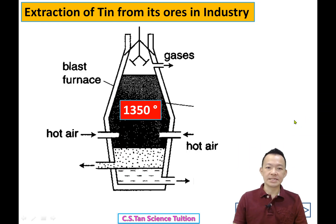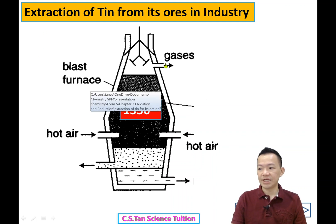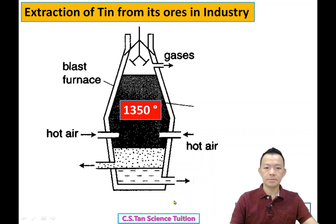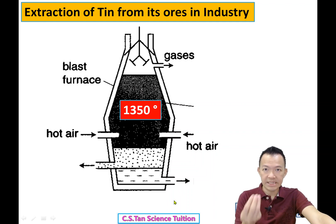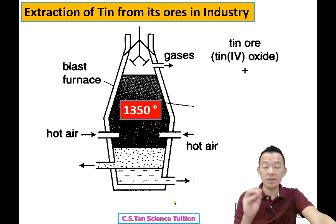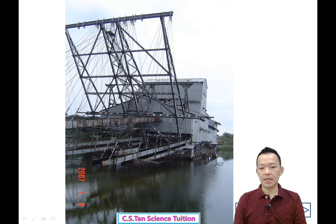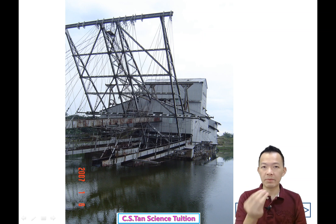So how is the process? To extract the tin from its ore you need the Blast Furnace. Inside the Blast Furnace: number one, add the tin ore. Where does the tin ore come from? It comes from Perak, somewhere around Perak.